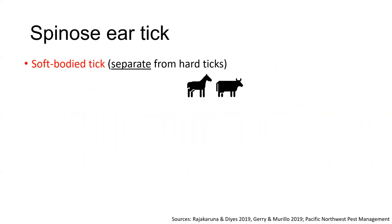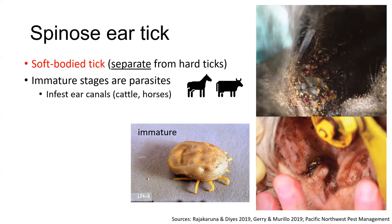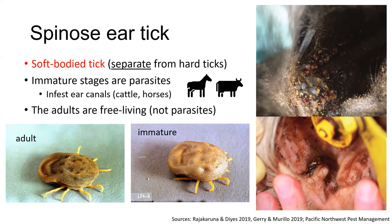In the previous slide, you saw the hard-bodied ticks that we are concerned with. Here we'll talk about one important soft-bodied tick called the spinous ear tick, which belongs to a separate group of ticks. The immature stages of the spinous ear tick are parasites and infest livestock, as we can see in the images on the right, where we can see multiple ticks infesting the ear canal of animals. The adults of these species are free-living, so they are not considered to be parasites. This tick is present in Ohio and will typically infest the ear canals of cattle and horses. The ear tick is the only soft tick we'll discuss in this video.